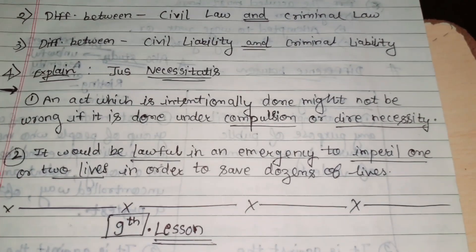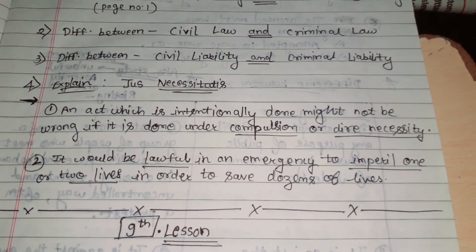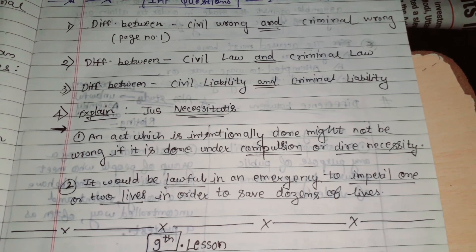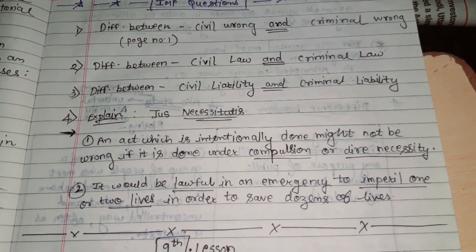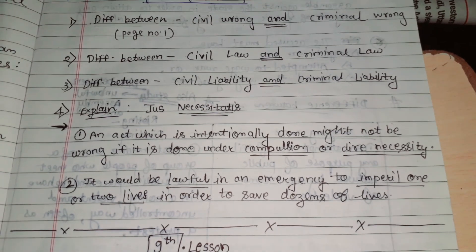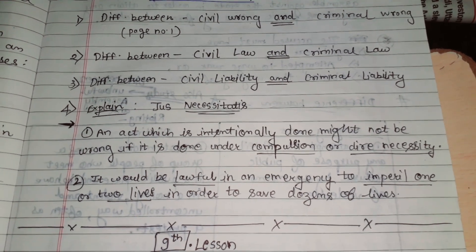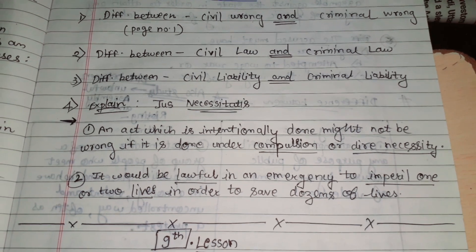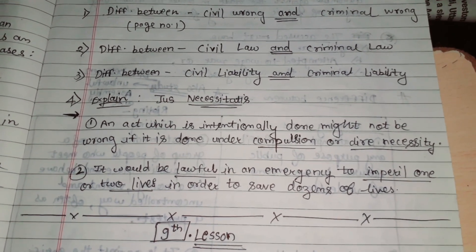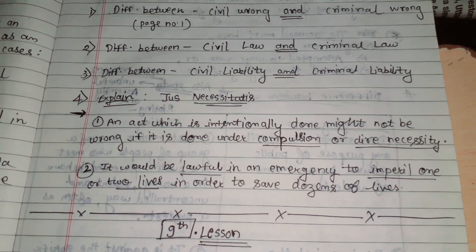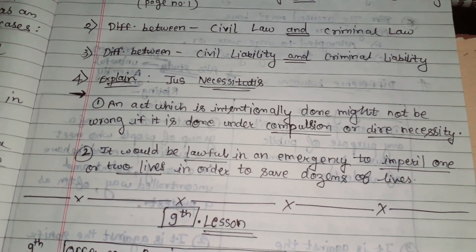It would be lawful in an emergency to imperil one or two lives in order to save dozens of lives. As we have heard, necessity knows no law. Acts done under compulsion or dire necessity, even if wrong in nature, but done for the welfare of the people or to save lives, will not be considered wrong acts. That is jus necessitatis.